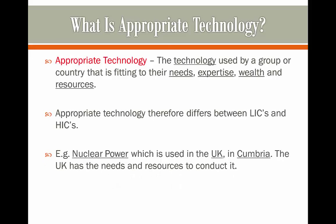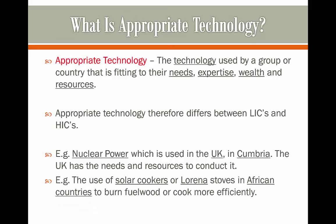For example, nuclear power is used in high-income countries such as the UK, specifically in Cumbria, and the UK needs the resources and has these in order to conduct it. And solar cookers and Lorena stoves are used in African countries such as Malawi — these are also Appropriate Technology because this is the technology fitting to their needs to reduce their amount of energy used from fuel wood, their expertise and ability to conduct it, and their wealth and resources.